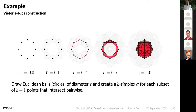Whenever two of those balls intersect, we draw an edge or the corresponding simplex. When two spheres intersect, we draw an edge; when three of them intersect, we draw a triangle, and so on. As we modify this threshold, the point cloud becomes progressively more triangulated and progressively higher-dimensional simplices are being added. Here we only add edges, then we add some triangles because we have the first intersections with three things, and then more and more as it gets higher dimensional.